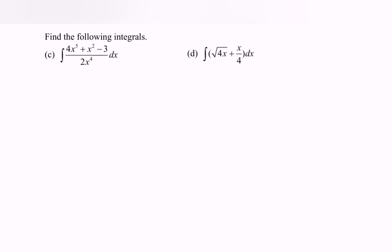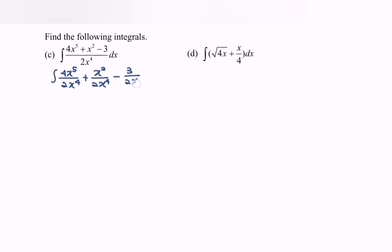Here we have part c. The question involves x to the power of 6 plus x squared, over x squared, minus 3 over 2 multiplied with x to the power of 4, with respect to x.